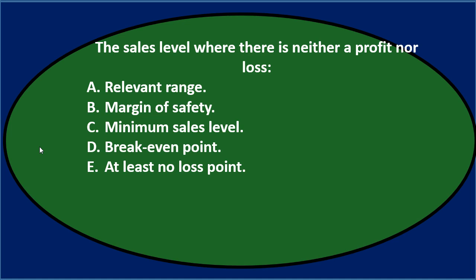Let's go through this again using the process of elimination. The sales level where there is neither a profit nor loss. We should have an idea of this because this is the core type of calculation in CVP analysis — cost volume profit analysis — which is the breakeven point. So we're looking for a question related to the breakeven point. Relevant range doesn't fit because there's only one point where it's going to be a breakeven in terms of sales dollars — not really a range. Margin of safety: you might think that's a safety point, but it's really a point above the breakeven, so that's not it.